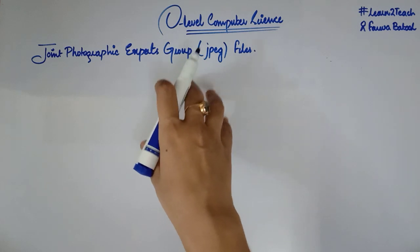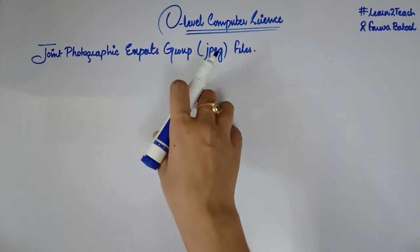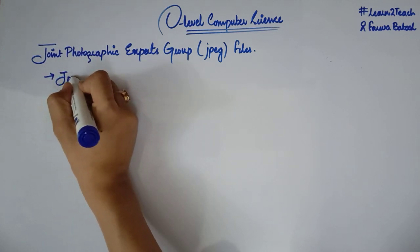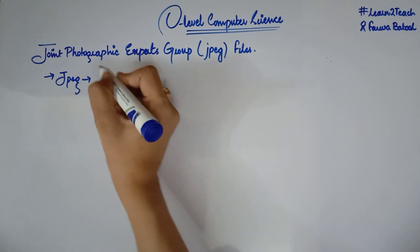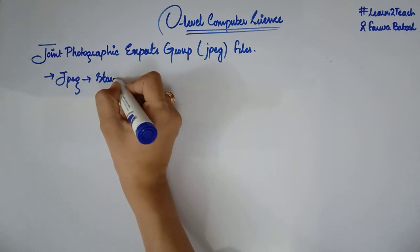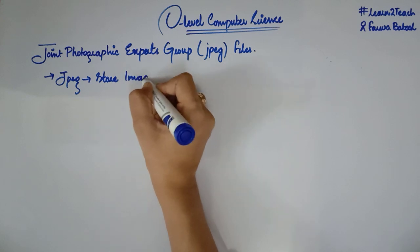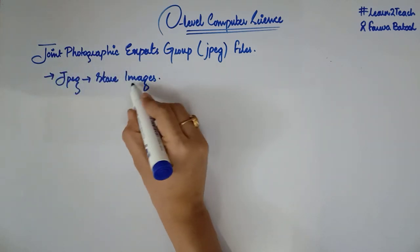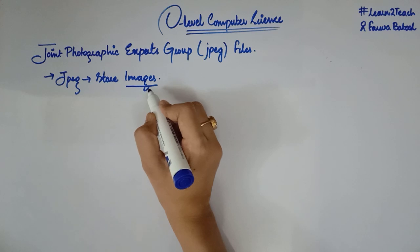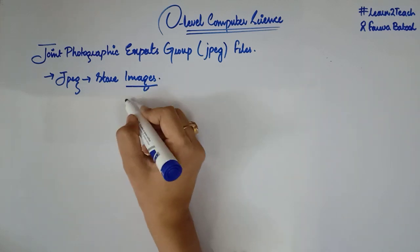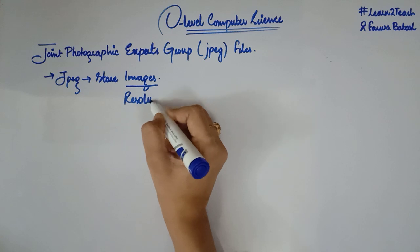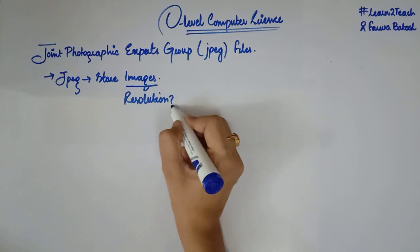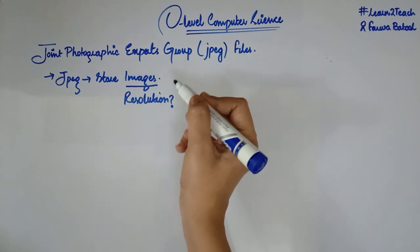The JPEG file format is basically used to store images and photos. Before going into detail of this particular file format, let me explain how images are displayed on a computer screen and what resolution is, because it is important for this topic of JPEG — you must understand what resolution of an image stands for.